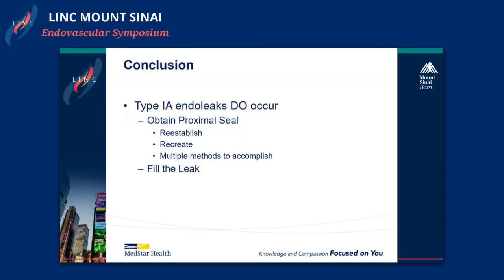In conclusion, type 1a endoleaks do occur. You ideally want to obtain the proximal seal either by reestablishing or recreating a new seal zone up above. There are multiple methods to accomplish this. Ultimately, you can also fill the leak instead of or in addition to resealing. Thank you.